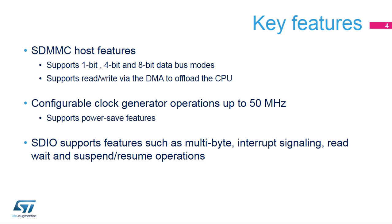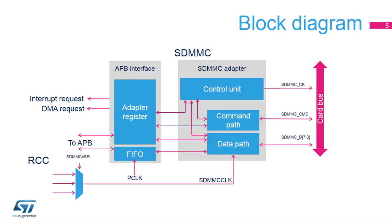The controller can interface with SDIO modules, with advanced features like read-wait, suspend or resume operations, and standard operations like multibyte transfer and interrupt signaling in 1- and 4-bit modes. The SDMMC controller is an SDMMC bus master that provides all SD, SDIO, and MMC functions needed to interface with cards. It consists of an SDMMC adapter and an APB interface.